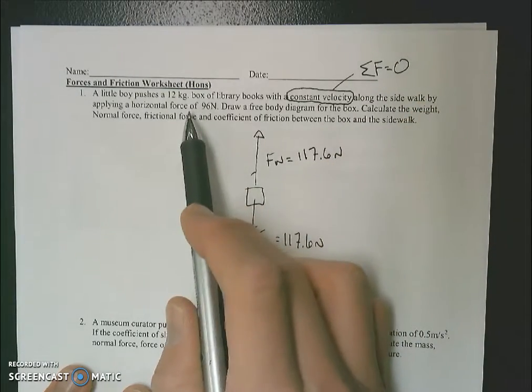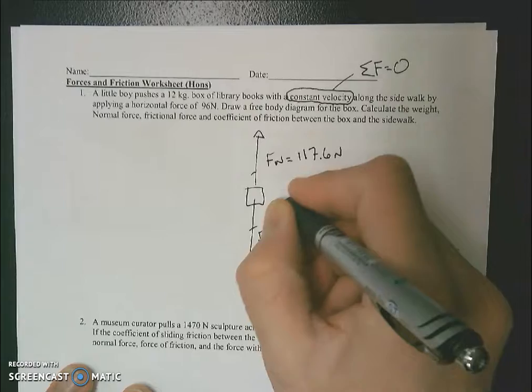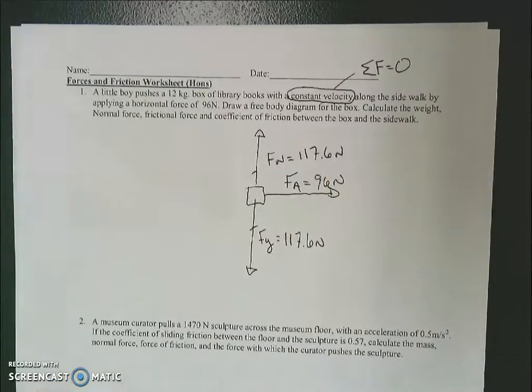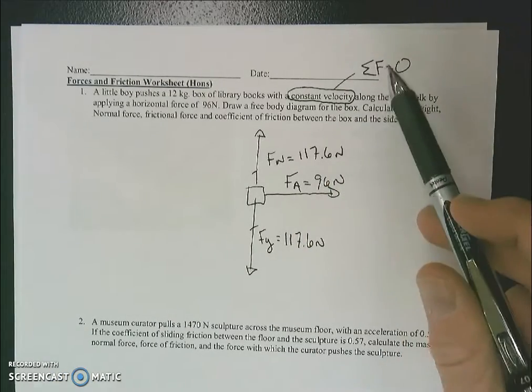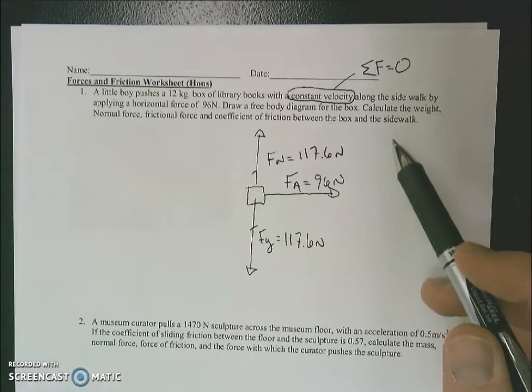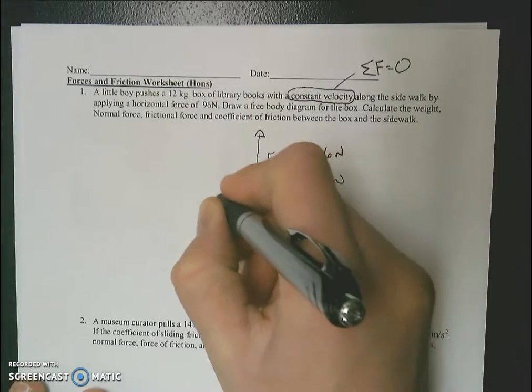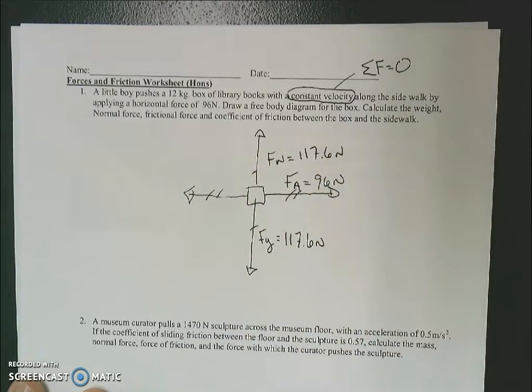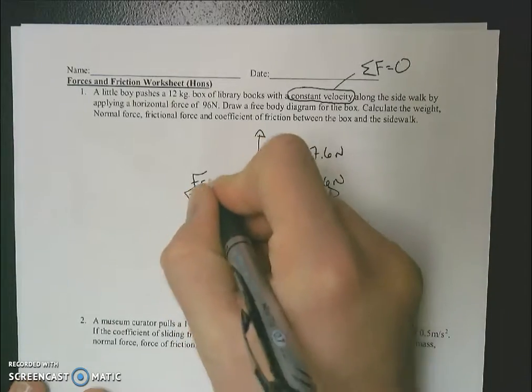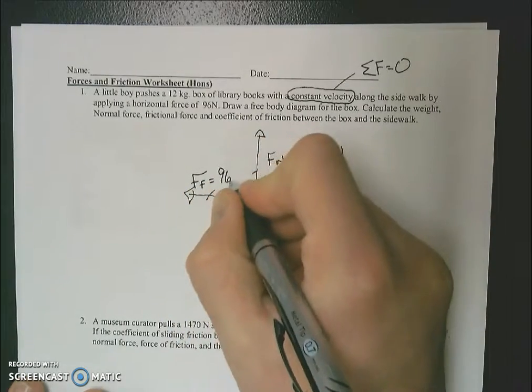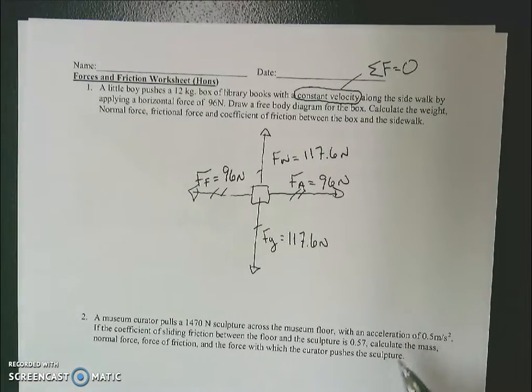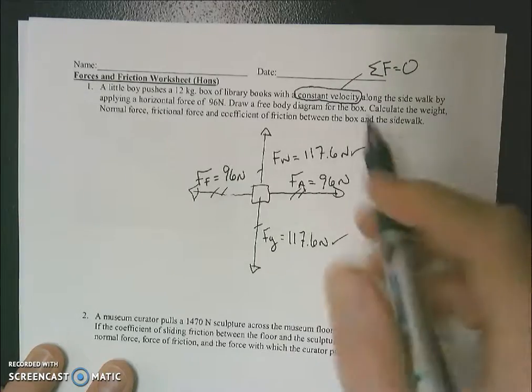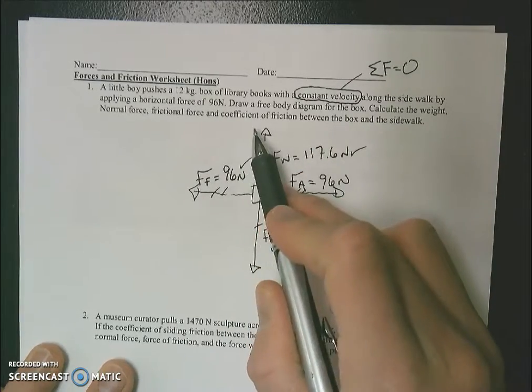We're told that he pulls at a horizontal force of 96 newtons. That means there's going to be a force applied of 96 newtons. Since it's a constant speed, since I know my forces all cancel out, I know my left forces will equal my right forces. Which means the resisting force acting against the way that this kid's pulling the box is going to be equal to the applied force. So that tells me my force of friction is going to be 96 newtons.